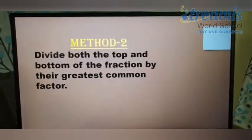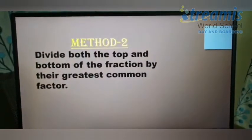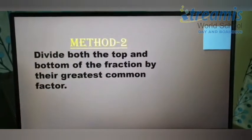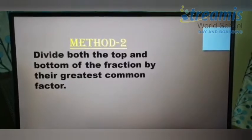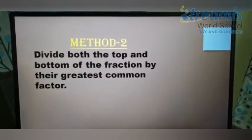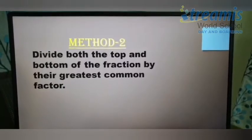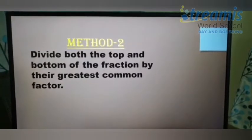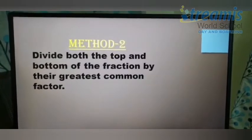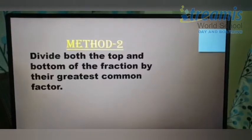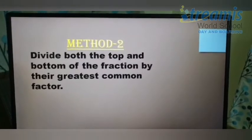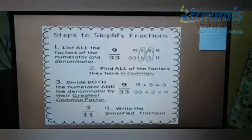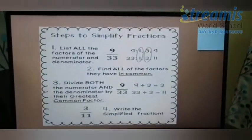Now, method 2. In method 2, we divide both the top and bottom of the fraction by their greatest common factor or we can say by their highest common factor. In short form, we say GCF or HCF. Yes, children, this method is quite easy and very quick. So, in this method, you need to follow three steps.